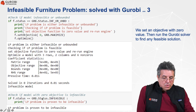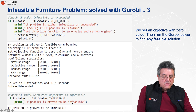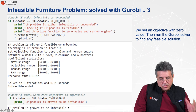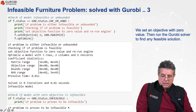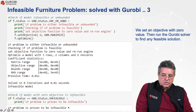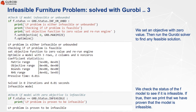We check if the argument GRB status infeasible is true, and if so we print that the LP problem is proven to be infeasible. This is how Gurobi detects and reports that the problem is infeasible.